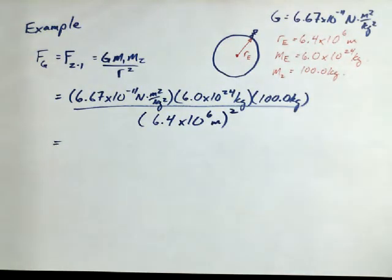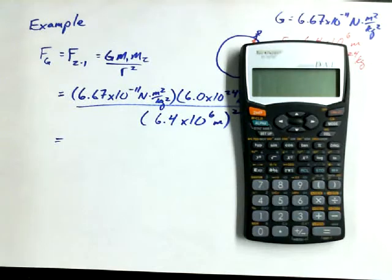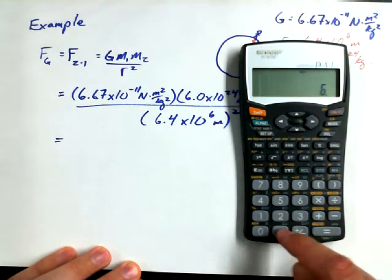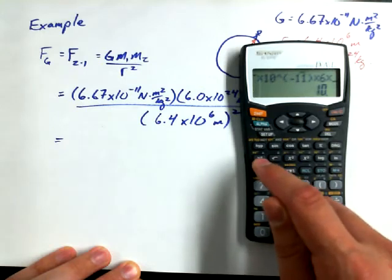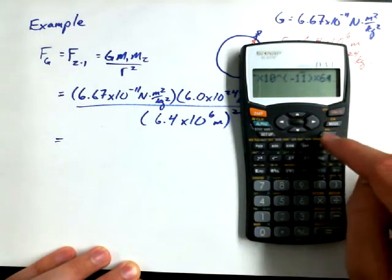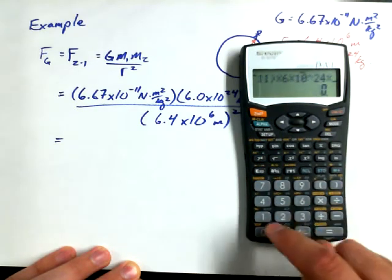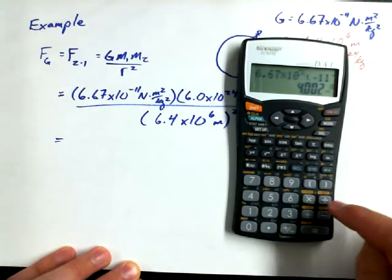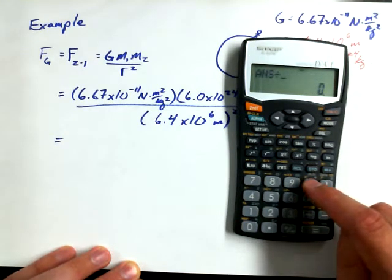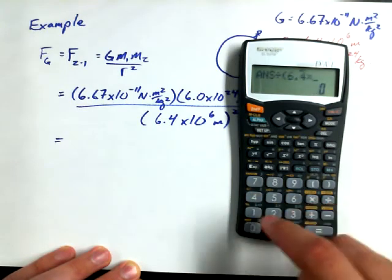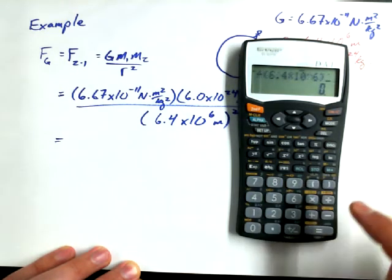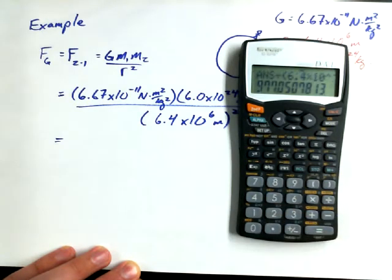So if you want to pull out your calculator and follow along with me, I'm going to do it up on the screen. Let's try it. 6.67 times 10 to the power of negative 11 times 6 times 10 to the power of 24 times 100 kilograms divided by... And now this is where it's really important to use your brackets, because you're in the denominator now. Divided by 6.4 times 10 to the power of 6, close brackets, to the power of 2, or squared. 977.